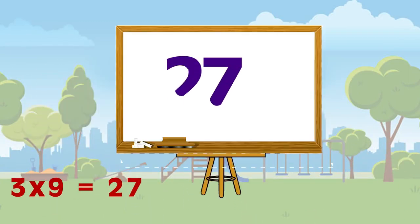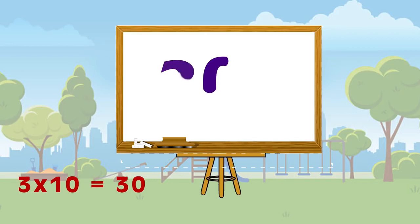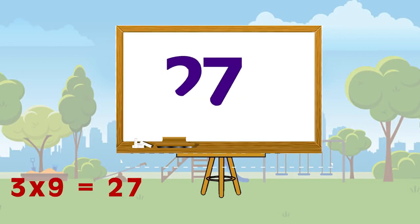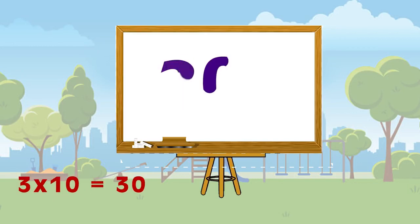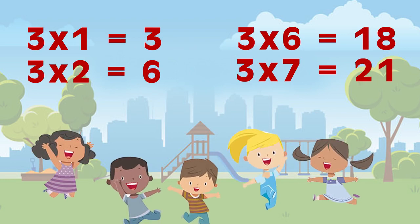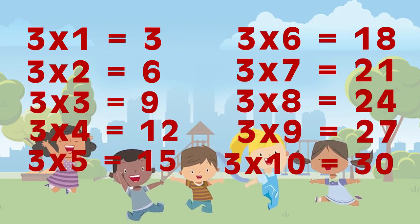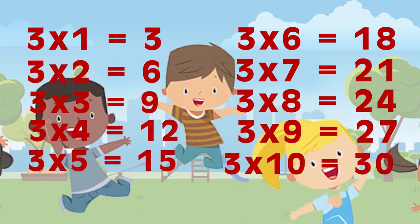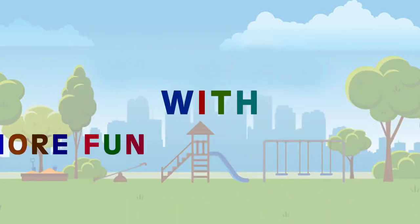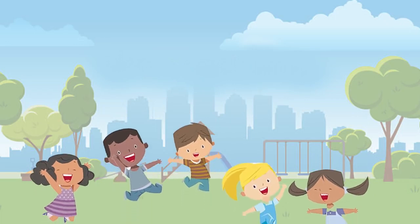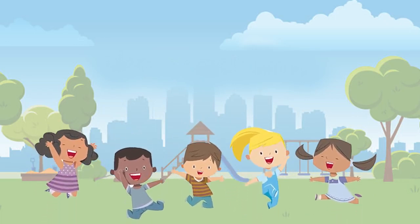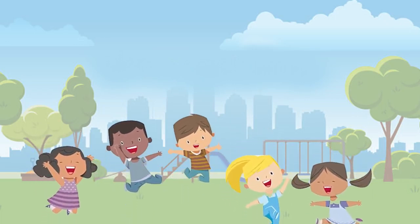Three nines are twenty-seven, three tens are thirty. Three nines are twenty-seven, three tens are thirty. Come on children, let us learn, let us learn, let us learn, with more fun. Yay! Yay! Yay! Yay!